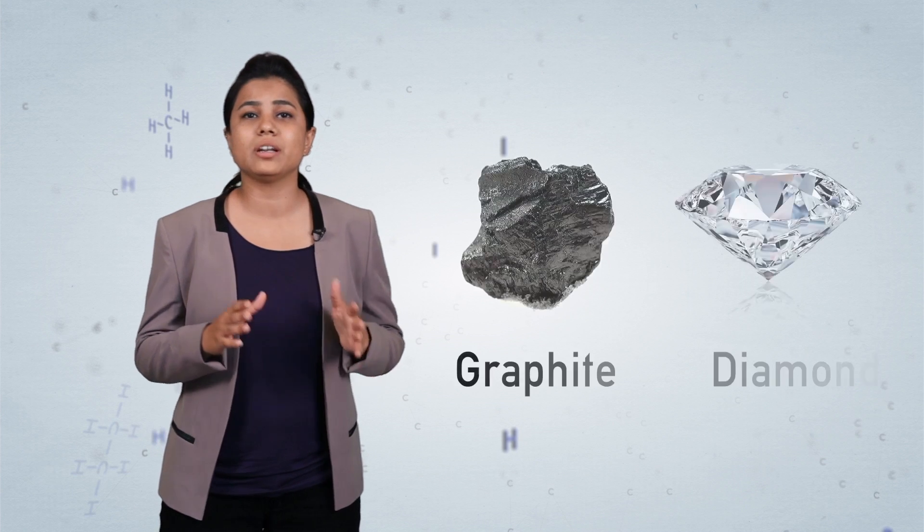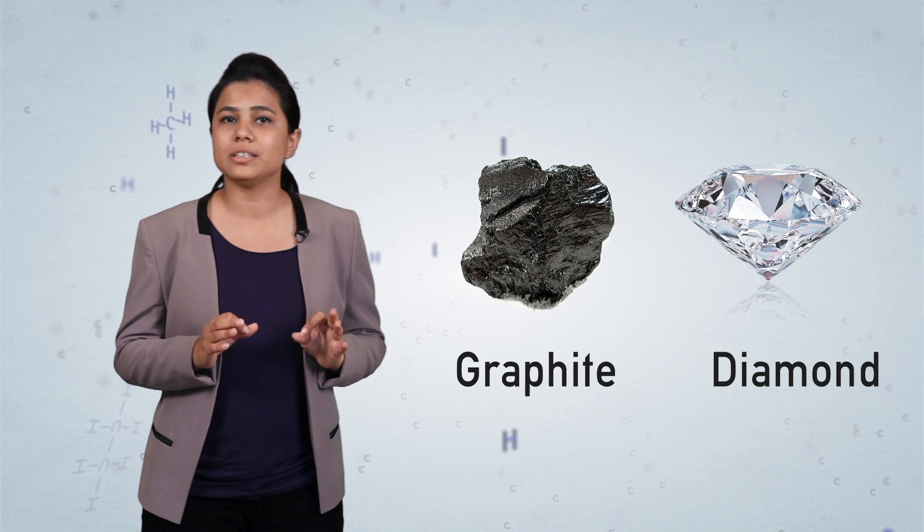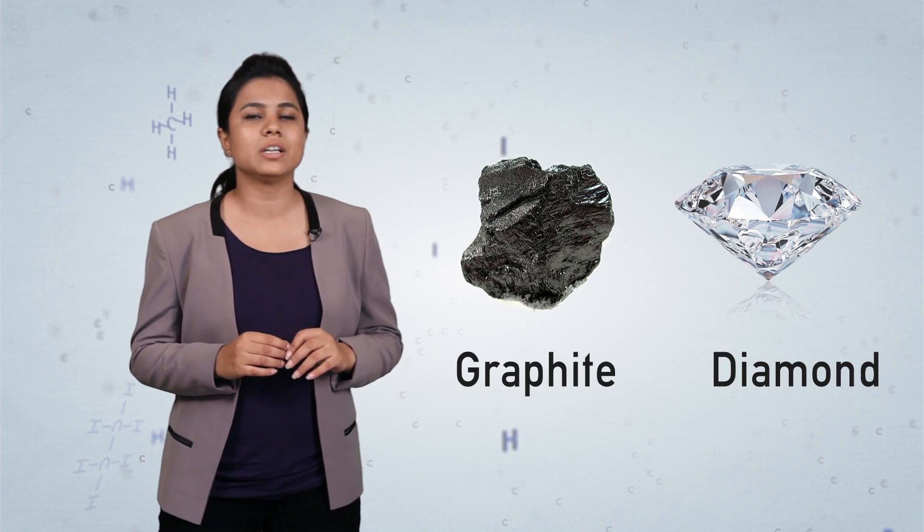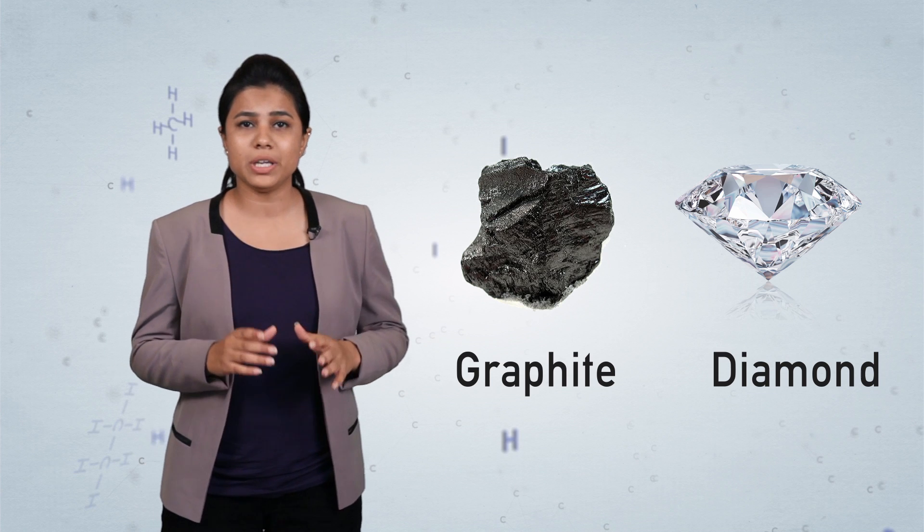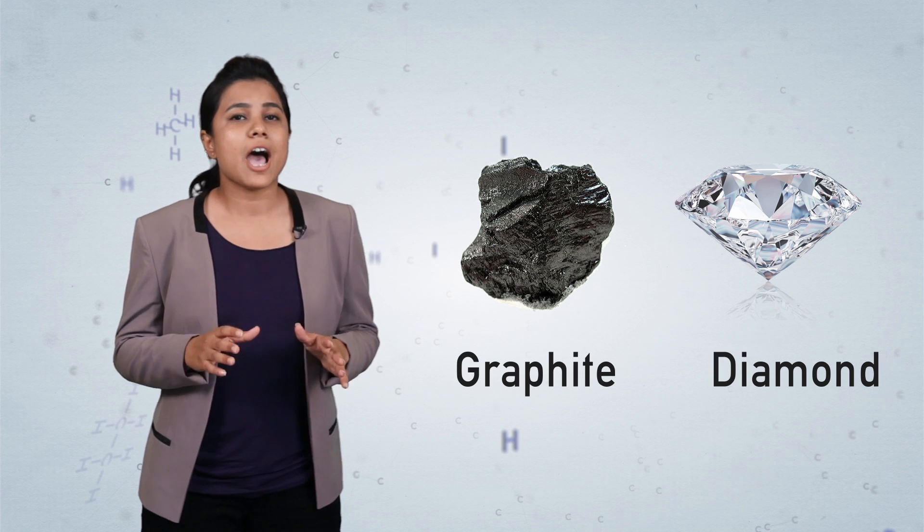Carbon in its elemental forms such as diamond and graphite are also useful. Diamond is one of the hardest substances known on earth and is used by human beings as a gemstone. Graphite is used in making electrodes and also the pencil leads which we use.